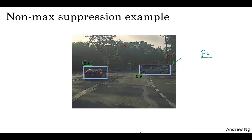So this is non-max suppression. And non-max means that you're going to output your maximal probabilities classifications, but suppress the close by ones that are non-maximal. So that's the name non-max suppression.